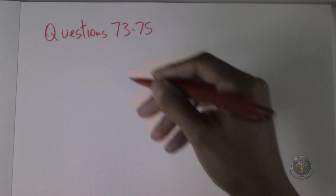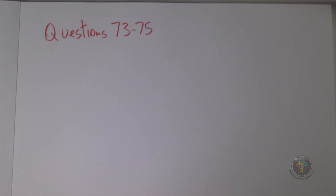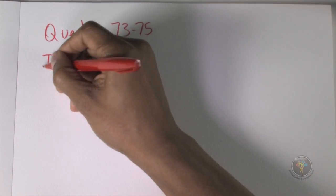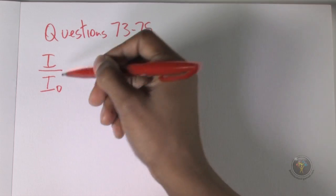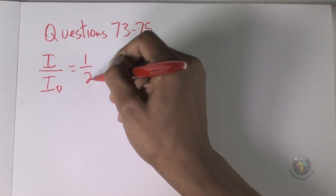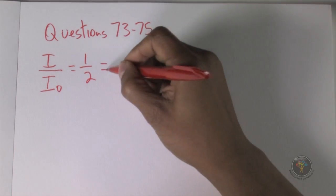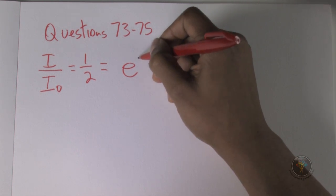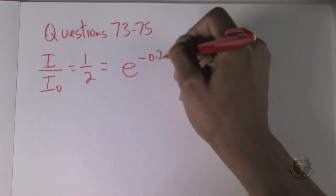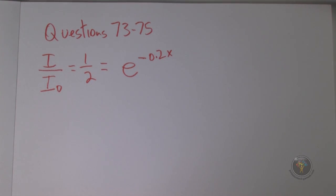Moving to question 73: the linear attenuation coefficient a is 0.2. Which thickness of absorber is required to stop half the protons from passing through? If half are stopped, the ratio I/I₀ equals one half, and this equals e to the power of negative 0.2x. The negative is in the original equation provided, and x is the thickness of the slab.